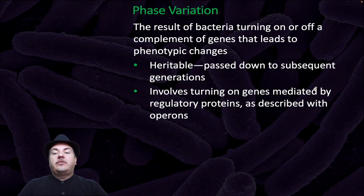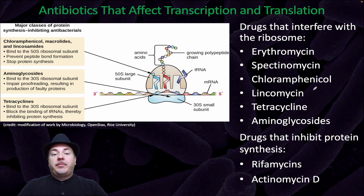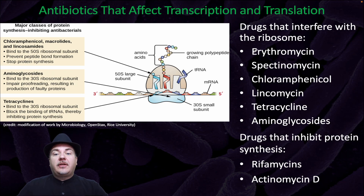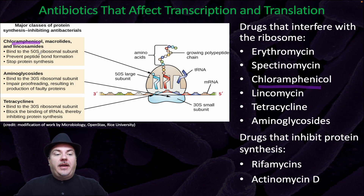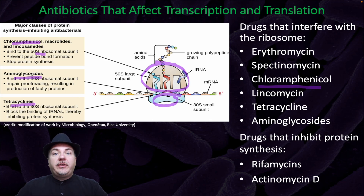Phase variation is the result of bacteria turning on or off a complement of genes that leads to phenotypic changes. This is heritable, passed down to subsequent generations, and involves turning on genes mediated by regulatory proteins as described with operons. Since we're talking about turning transcription and translation on and off, it's also important to note there are several drugs that interfere with transcription and translation. For example, chloramphenicol binds to the 50S ribosomal subunit and prevents the ribosome from performing its function. Drugs can also bind to the small subunit of the ribosome, such as tetracyclines or aminoglycosides.